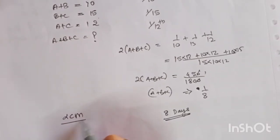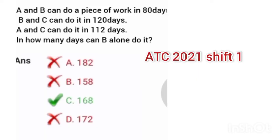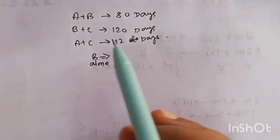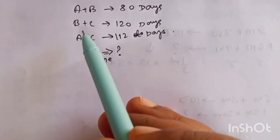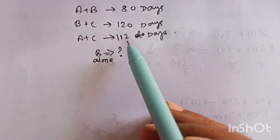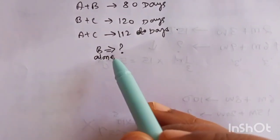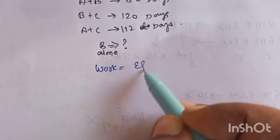Another method is LCM. We'll see another example for this method. Okay, so next thing: A plus B is doing the work in 80 days, B plus C is doing in 120 days, and A plus C is doing 112 days. So B alone will do in how many days? So you have to use the concept of work is equal to efficiency into time.